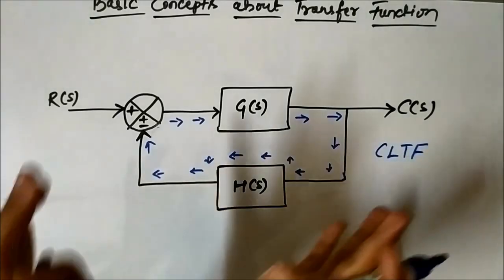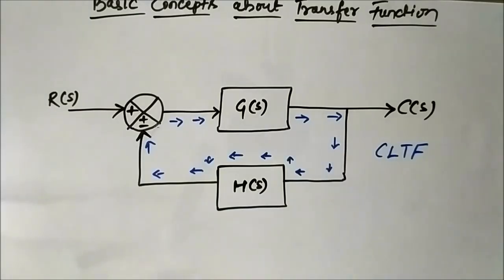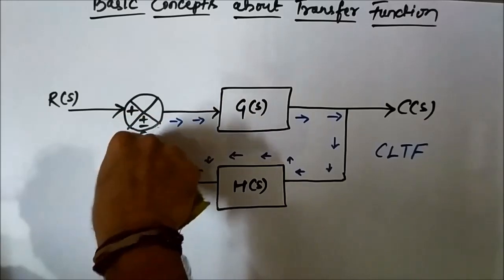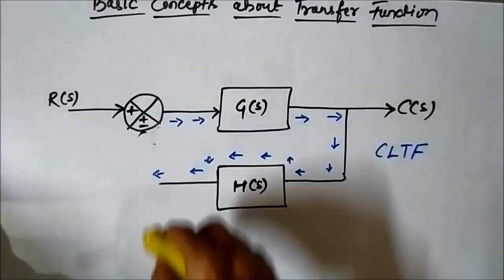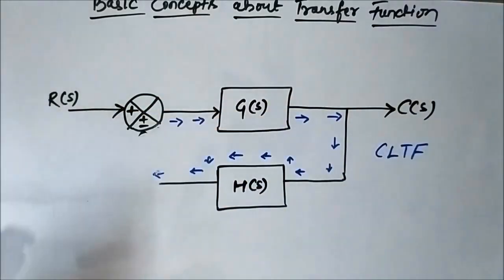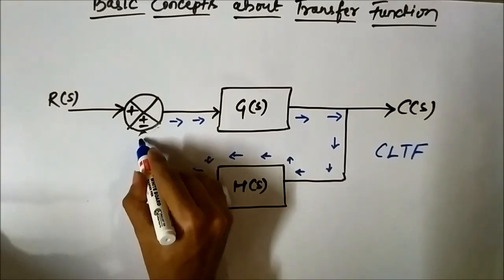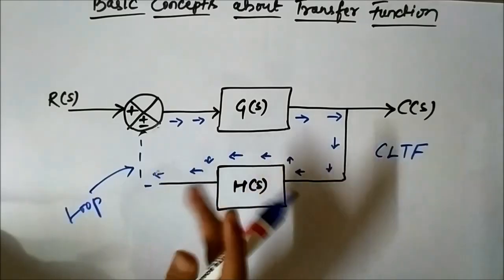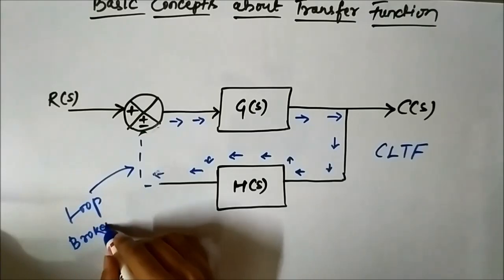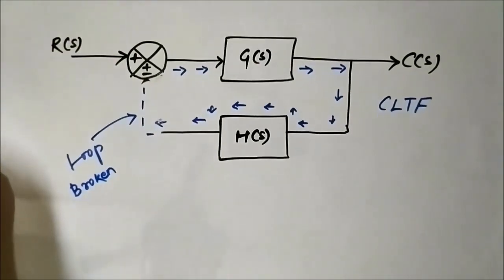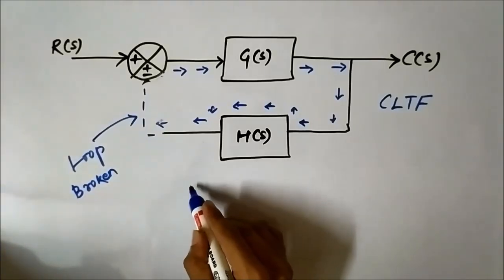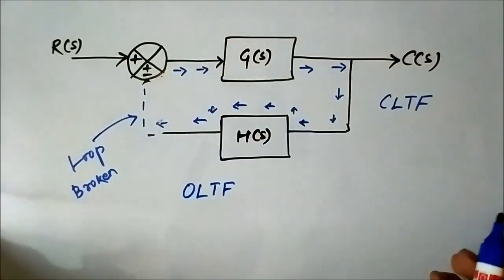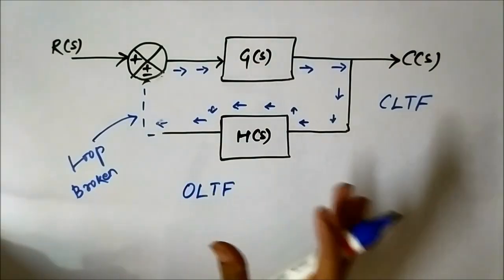We will derive how to get this closed loop transfer function. But if we break the loop — if we open it — it is no longer a closed loop, because the loop is broken at that point and the path is no longer a closed path. This is called the open loop transfer function when the loop is broken.